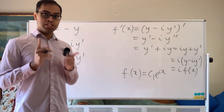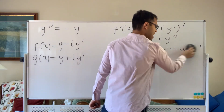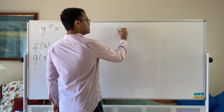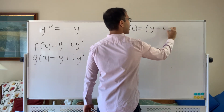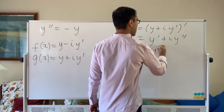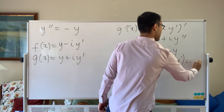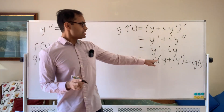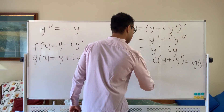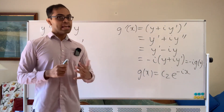We can play the same game with g, which is closely related to f. Computing g prime of x, we get the derivative of y plus i times y prime, which equals y prime plus i times y double prime. Since y double prime is minus y, that's y prime minus i times y, which equals minus i times g of x — you can verify this since minus i times i equals 1. By the same reasoning, g of x must equal a constant c2 times e to the negative i x.